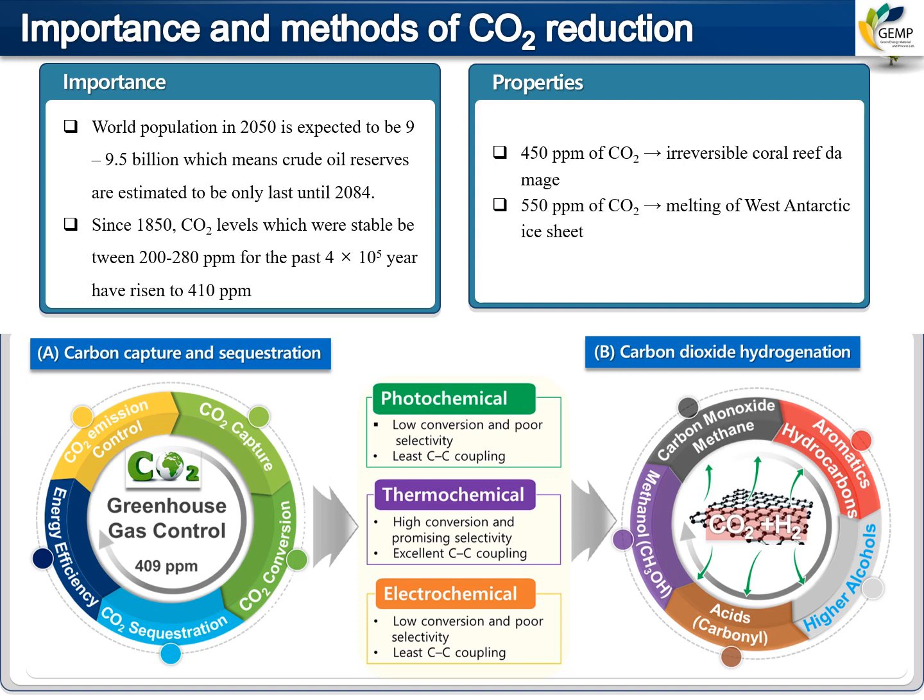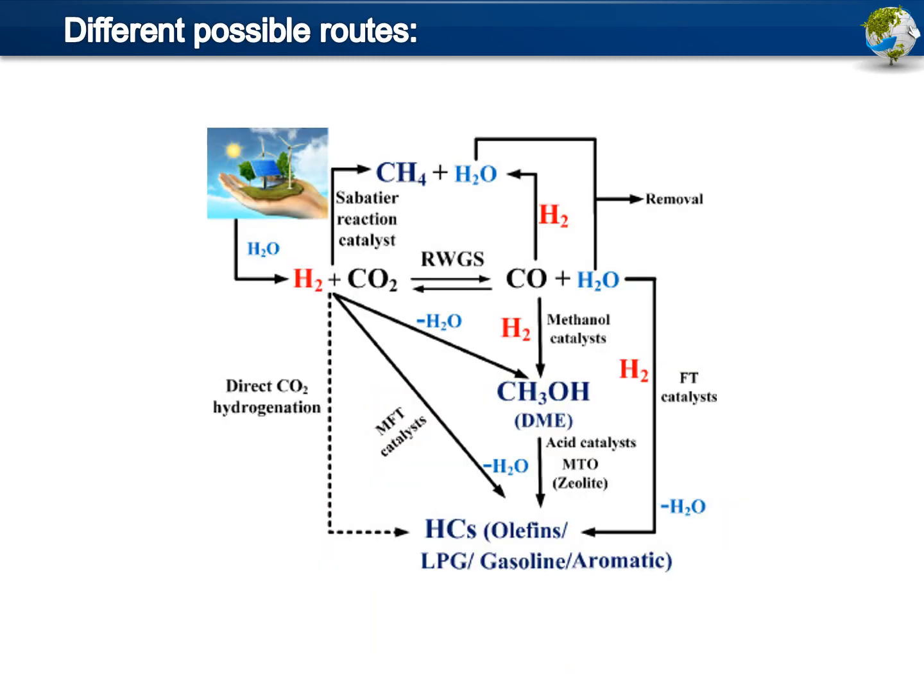The types of products we can get from CO2 hydrogenation include carbon monoxide, methane, aromatics, hydrocarbons, higher alcohols, acids, methanol, and more. All these different products depend upon the type of catalyst used for CO2 reduction. There are also different possible routes for CO2 hydrogenation.